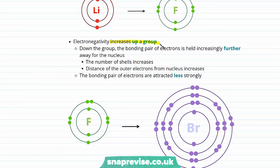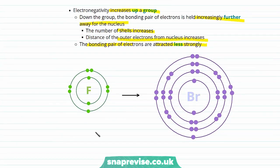Up the group, we see an increase in electronegativity because down the group the bonding pair of electrons is held increasingly further away from the nucleus. The number of electron shells increases and the distance of the outer electrons from the nucleus therefore increases too. Moving down the group from fluorine to bromine, the bromine atom has so many more electron shells and the bonding pair of electrons will be held much further away from the nucleus.